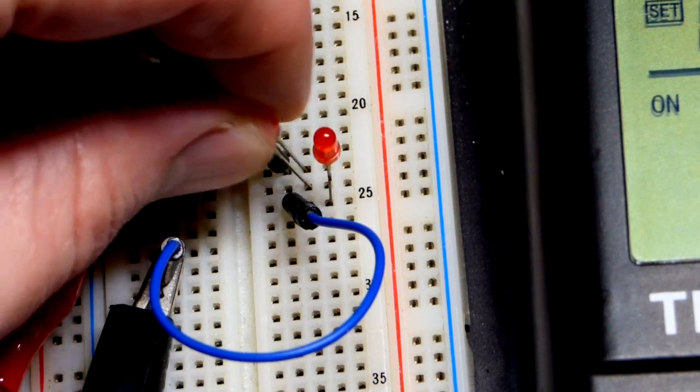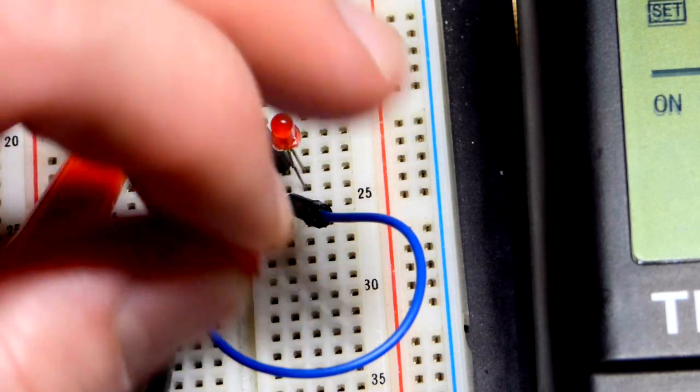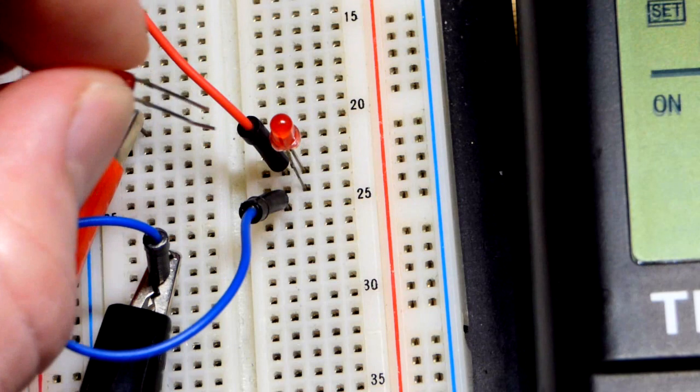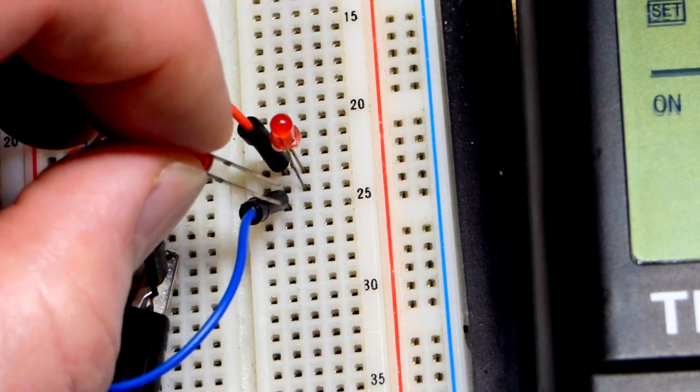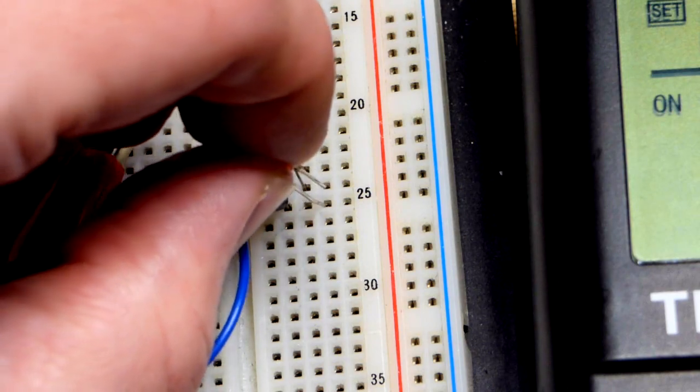And then we grab this one. You can see the wiring is the opposite, so the short lead, the cathode, is going to connect to the cathode of that one towards the more positive side of the power supply. The long lead, the anode, is going to go to the same row as that blue jumper right there.